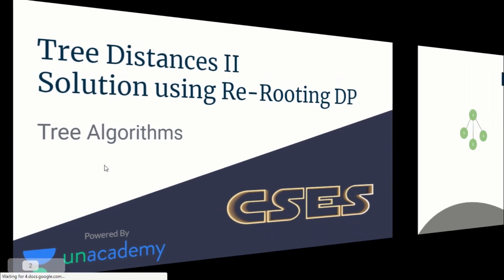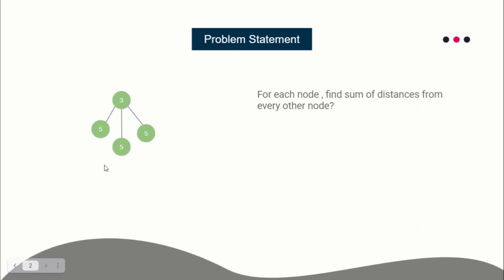The problem statement is simple: for each node, you have to find the sum of distances from this node to every other node of the tree. For example, for this node the answer would be one plus one plus one — three — because all other nodes are at distance one. For another node, two nodes are at distance two and one is at distance one, so two plus two plus one equals five.